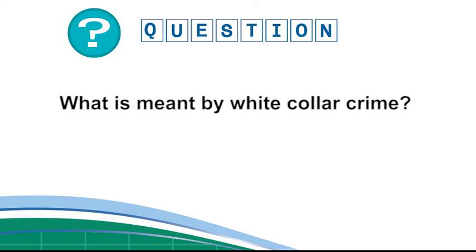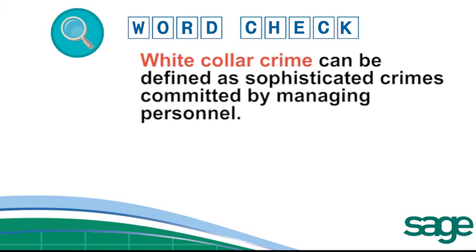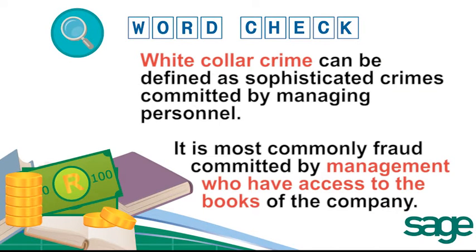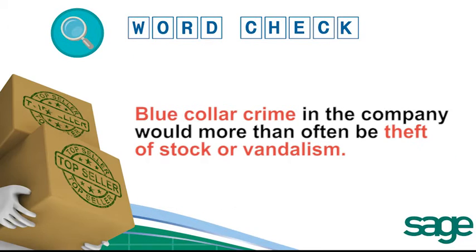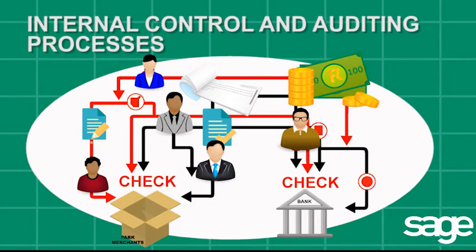What is meant by a white-collar crime? White-collar crimes can be defined as sophisticated crimes committed by managing personnel. It is most commonly fraud committed by management who have access to the books of the company. Blue-collar crime in the company would more often be theft of stock or vandalism.